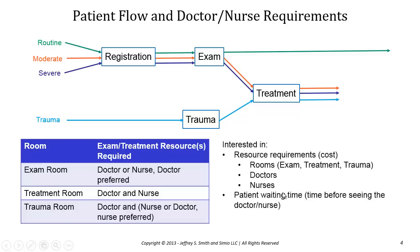What we're interested in are resource requirements, which directly affect the cost of a design. We have two different types of resources: the room resources — exam room, treatment room, and trauma room — and the medical staff, doctors and nurses. When a patient arrives at the exam room, they first need access to the room resource, and then you need a doctor or nurse to come perform the exam. This is the application of a secondary resource.